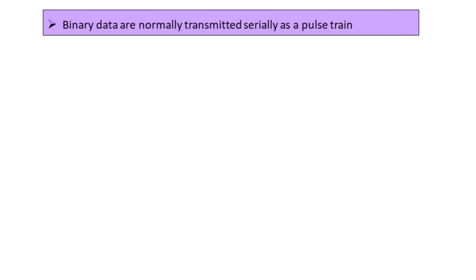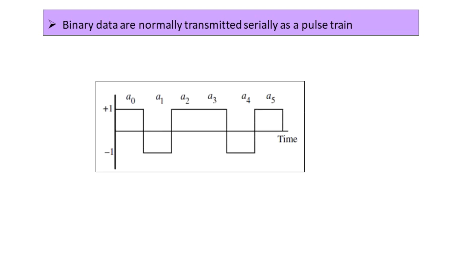Digital data, also called binary data in the form of 0s and 1s, is normally transmitted in serial fashion as a pulse train. In this pulse train we have amplitude levels at constant levels plus 1 and minus 1, with samples a0, a1, a2, a3, a4, a5 on the time axis.